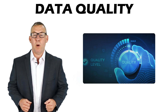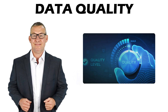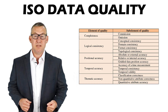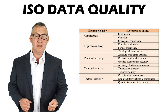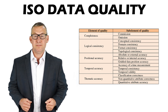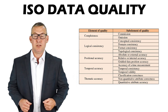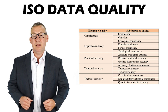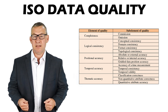Data quality is the overall suitability of a data set. Types of data quality, according to the International Standards Organization, or ISO, are completeness, logical consistency, positional accuracy, temporal accuracy, and thematic quality.